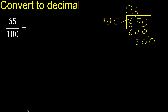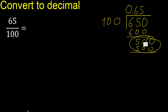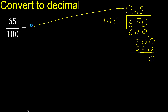500. 100 multiplied by which number? Multiplied by 6 is 600 — is greater. Multiplied by 5 is 500. Subtract 0. Therefore finish.